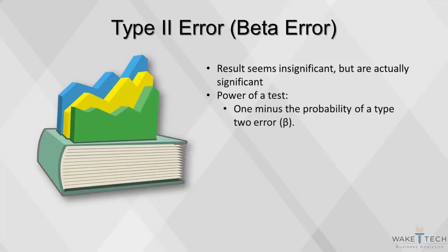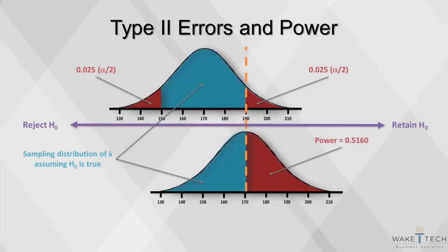The power of a test is 1 minus the probability of a type 2 error. It is the probability of rejecting the null hypothesis when the alternative hypothesis is true. In these competing sampling distributions, alpha is set to 0.05. The bottom curve assumes HA is true; the top curve assumes that the null hypothesis H0 is true. Its right tail shows that we will reject H0 when a sample mean exceeds 189.6. The probability of getting a value greater than 189.6 on the bottom curve is 0.5160, corresponding to the power of the test.